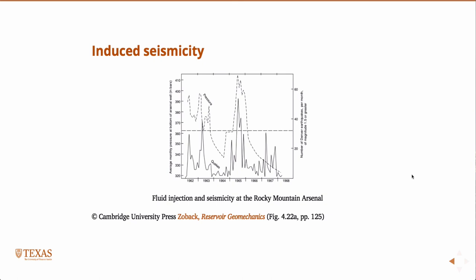This is not a new phenomenon. This is actually from the Rocky Mountain Arsenal in Colorado in the 1960s. The solid line shows the number of earthquakes of magnitude 1.5 or greater, and the dashed line is the average monthly pressure at the bottom of the well. You can see that the frequency of earthquakes almost identically corresponds to whenever the pressure is high in the reservoir. So while it's received a lot of attention lately due to hydraulic fracturing, induced seismicity is not a new phenomenon.